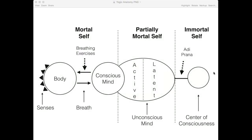The last time we stopped at chapter 2, verse 2, we talked about the three aspects of Kriya Yoga: self-study, Ishvara Pranidhana — which is opening up to the universal self or an expansion of consciousness — and training of the senses and the mind. Kriya Yoga helps to attenuate the Kleshas, and sometimes it's the same, Samadhi.